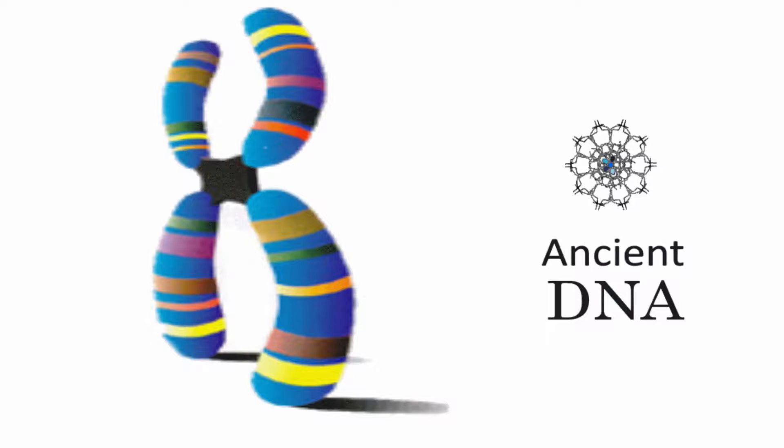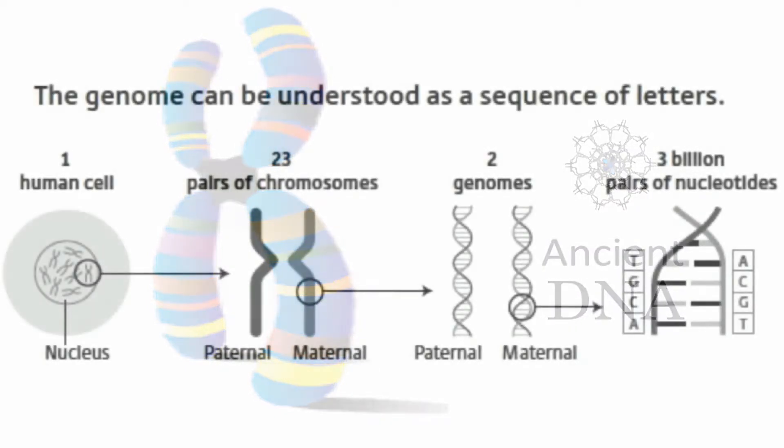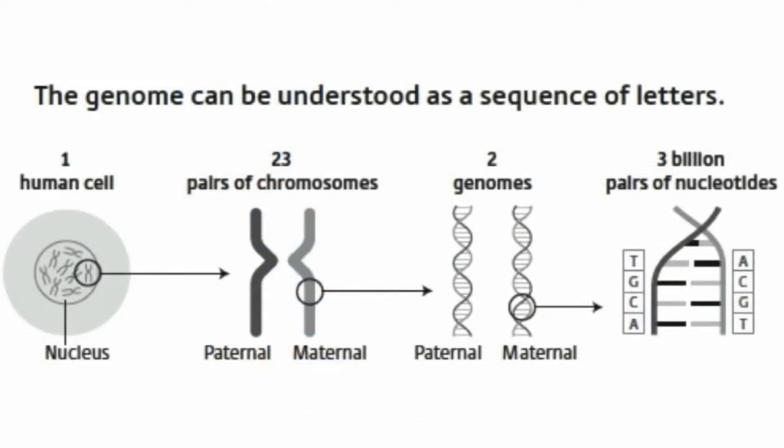In order to understand what haplogroups are, you need to understand how human DNA is organized in chromosomes and how chromosomes are inherited — what chromosome recombination is. In your cell you have 23 chromosomes, of which one is the sex chromosome, X or Y, and you have mitochondrial DNA.